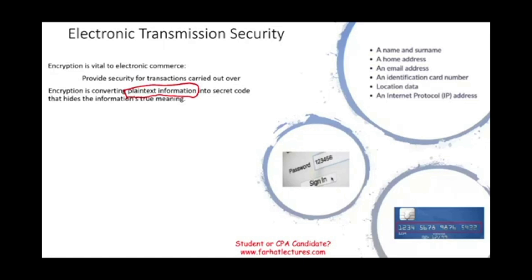I'm going to give you a simple example — please don't think this is exactly how it works, but it gives you the idea of encryption. Let's say your credit card number is 1, 2, 3, 4, 5, 6, 7, 8, 9, 10, 11... When you send that, it gets encrypted using a secret formula — an algorithm. For example, for every number it adds five, so one becomes six, two becomes seven, three becomes eight, and so on. It could also subtract one from the last digit, add five to the first digit, or multiply the middle digit by 100. So if that message is intercepted, it can only be decoded through that formula. The formula is the secret — that's what the secret code is.